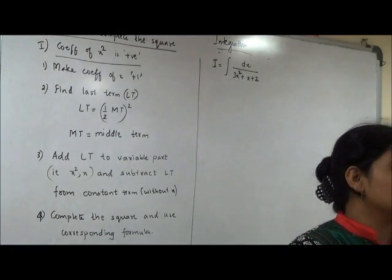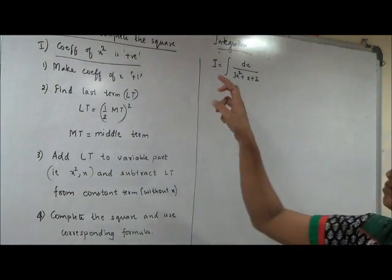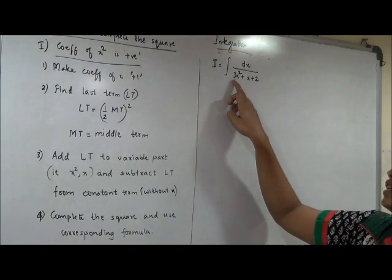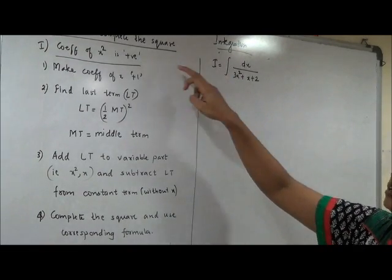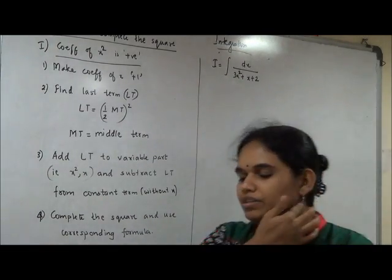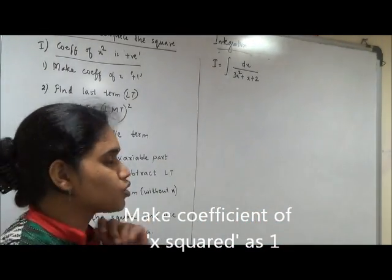the quadratic equation which you have in the denominator, coefficient of x square is a positive number. So in that what you are supposed to do first is, make the coefficient of x square plus 1.